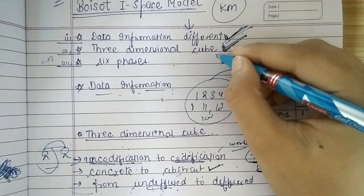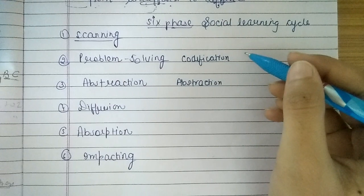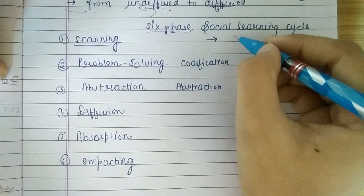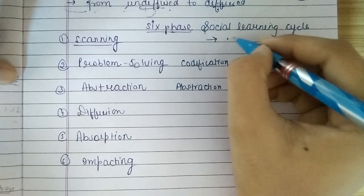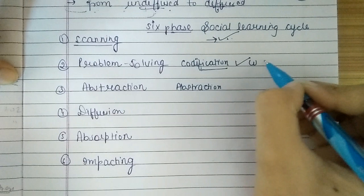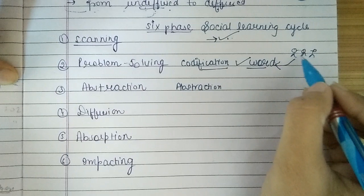The third thing this model discusses is the six faces of the social learning cycle — how we learn knowledge. First is scanning the environment. When we scan the environment, we realize the problem — we identify the problem in the organization. Second is problem solving. When we try to solve the problem, all employees discuss the problem and the problem-solving process starts. They express the problem in words — that means codification.